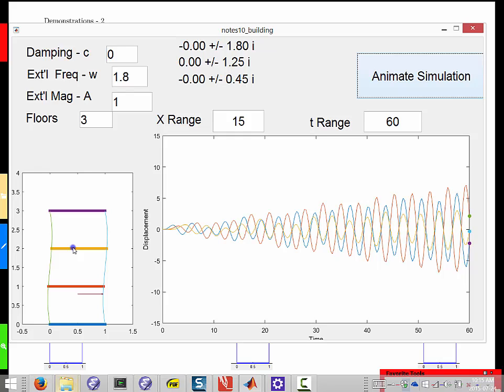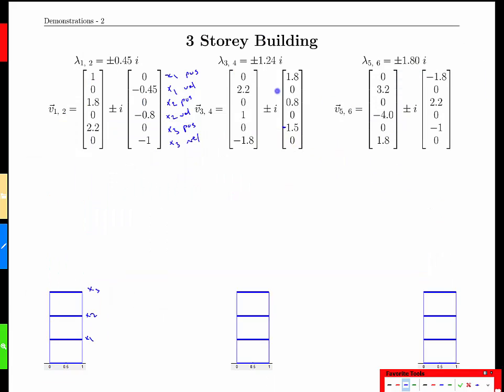So hopefully that gives you a better sense of why we're so interested in the eigenvalues. Mainly because we can trigger various modes by forcing this structure with a mode or with a frequency that matches one of those modes. And also, the interpretation of what would the oscillation in that mode look like? Can we predict that in advance?